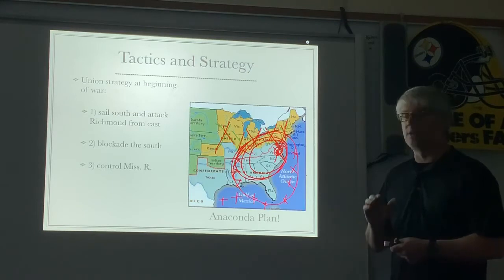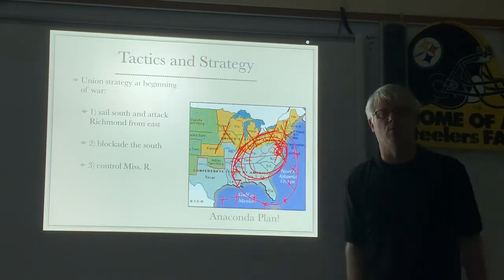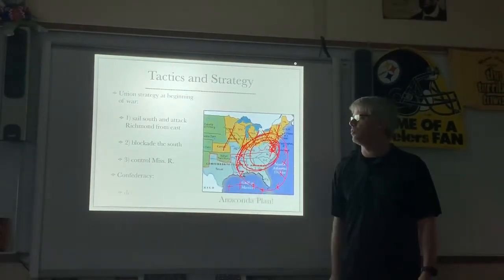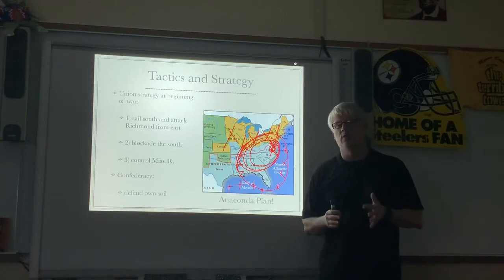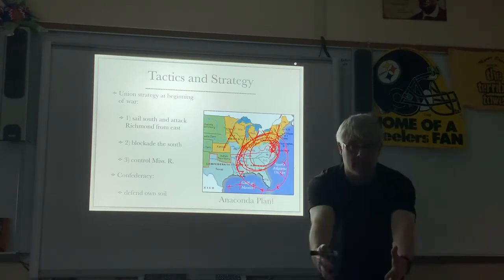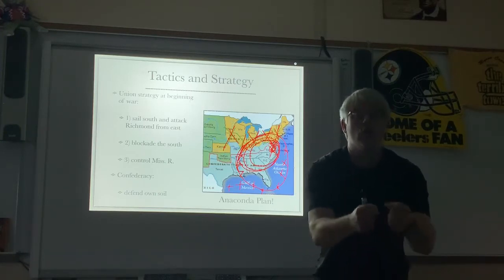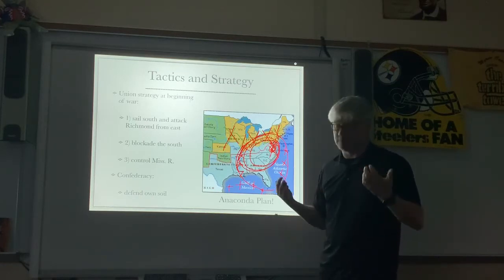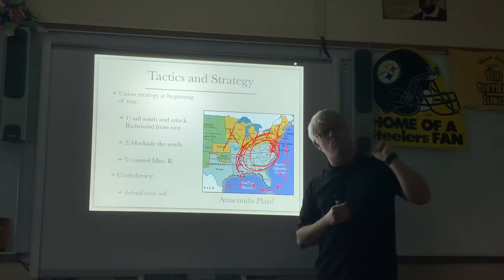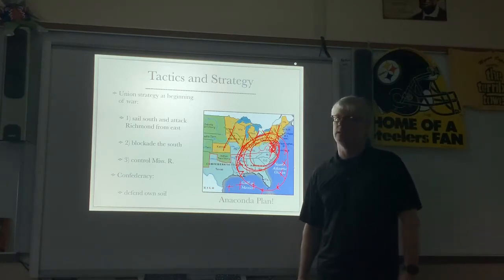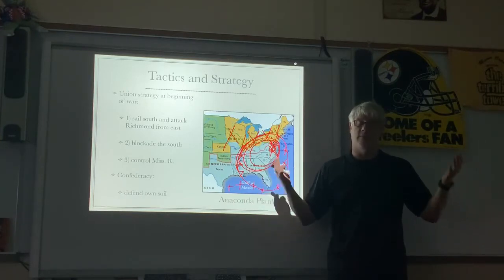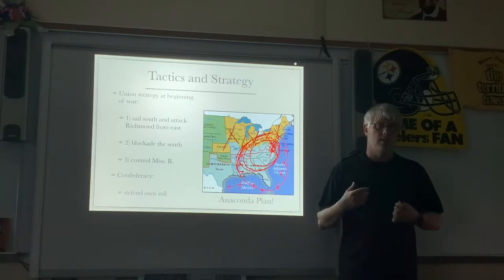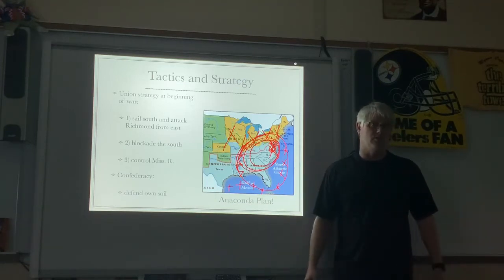Because of that, this strategy gets the name the Anaconda Plan — like a snake wrapping around its victim and squeezing it into submission. The Confederate strategy is much simpler: to defend themselves, to defend their own soil. In order for the Union to win, they have to physically go into the Confederacy and force them back. The Confederates don't need to march north — they just want to be separate. All they have to do is keep the Union armies from invading, and if they do that, they win.